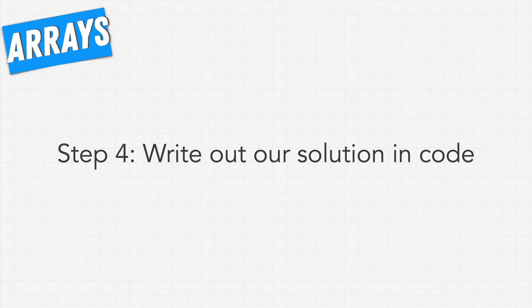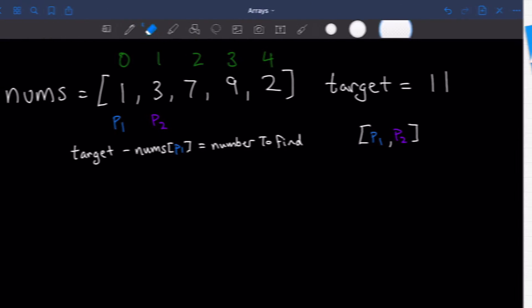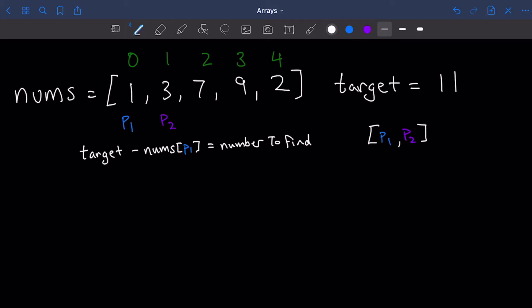In the previous step, we came up with a solution that was not coding. Now we want to actually come up with the code version of the solution. Going back to our tablet here, we'll see that I pretty much just tidied up a little bit what we had written. We have to now convert this into a coding solution and we want to make sure that we clarify and communicate very clearly.